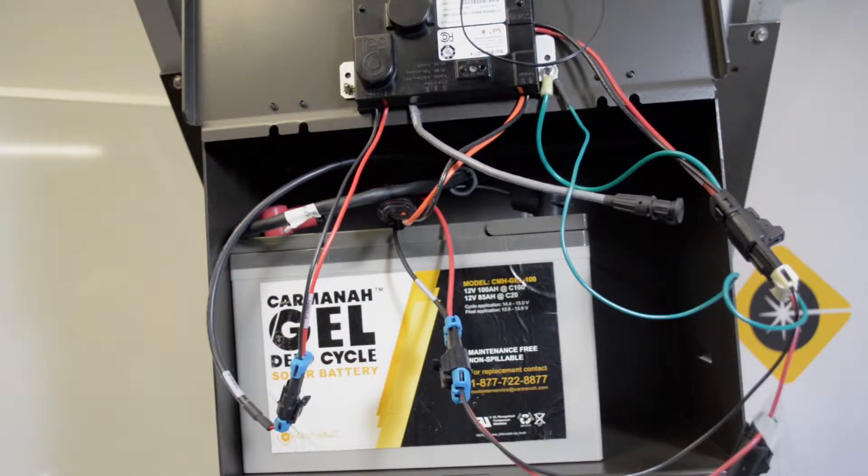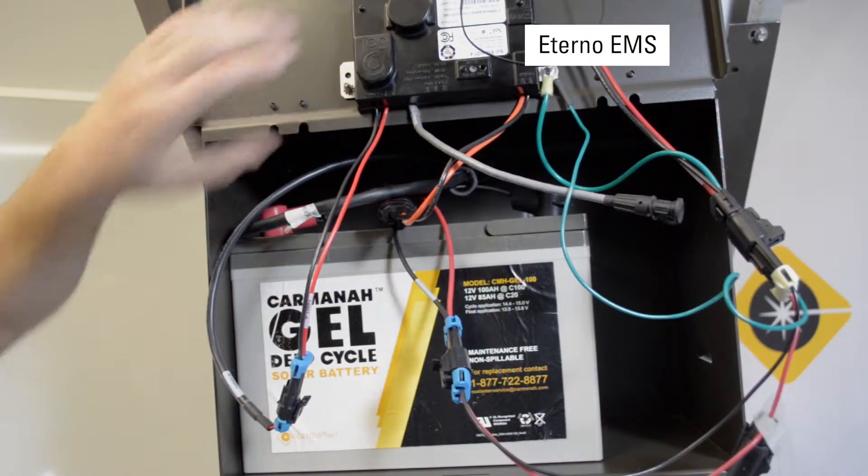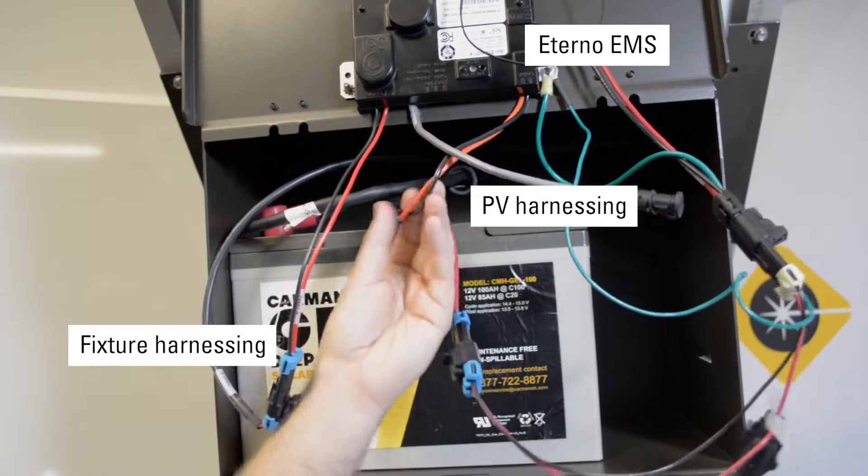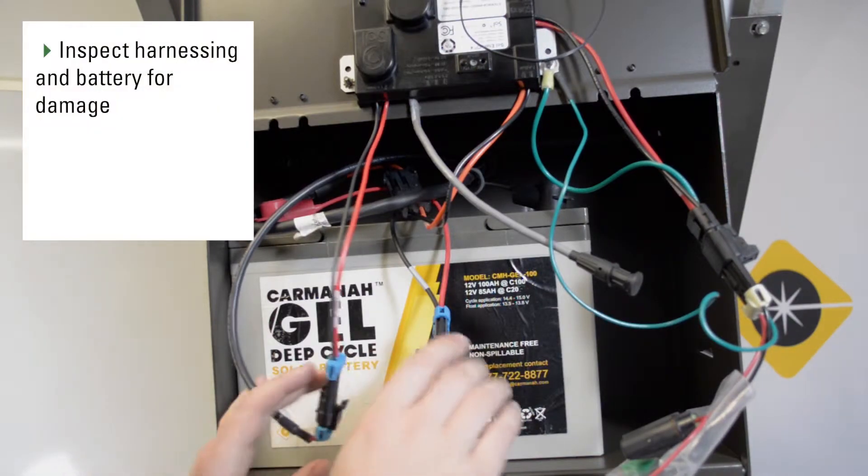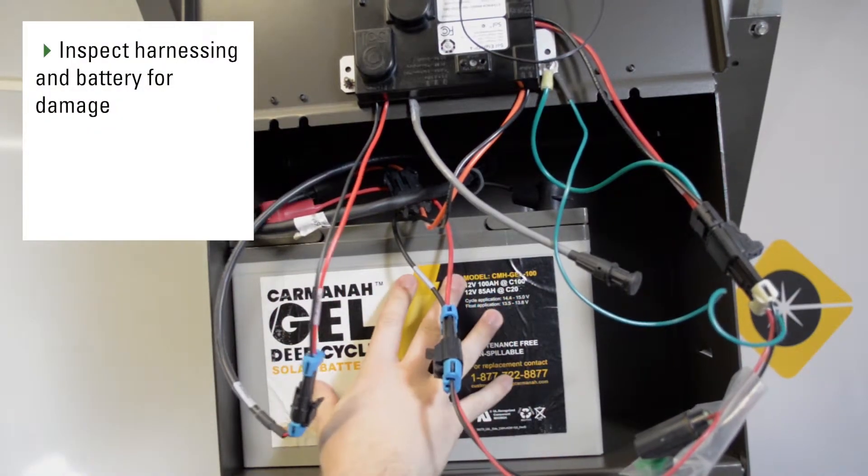Once you gain access to the cabinet, you'll find the Eterno EMS, fixture harnessing, PV harnessing, and battery harnessing. First thing we want to do is check for any damage to the harnessing and any damage to the battery itself.